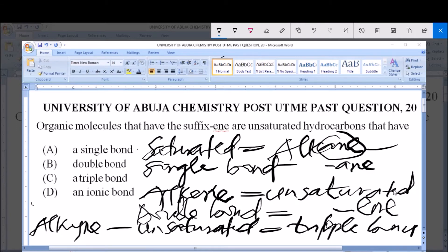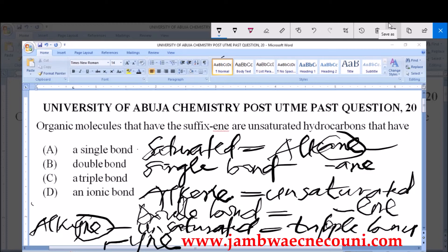But our question here says organic molecules that have the suffix -ene and are unsaturated hydrocarbons. Now, the suffix -ene is peculiar to alkene, and alkenes, like I told you, have double bonds.